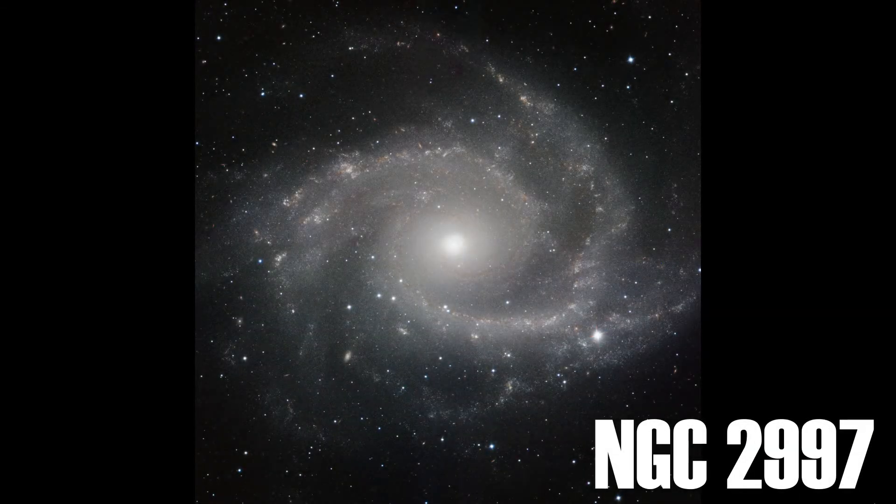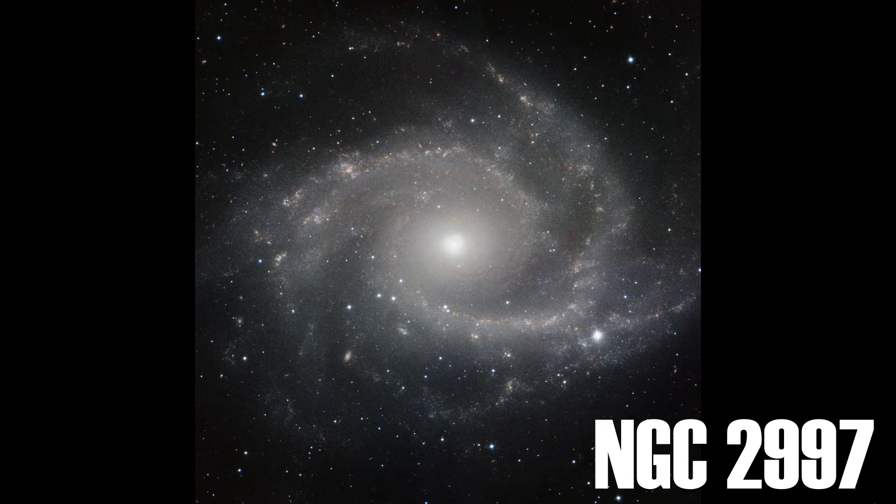The brightest galaxy in Antlia is NGC 2997, an unbarred spiral galaxy more than 7 megaparsecs away.